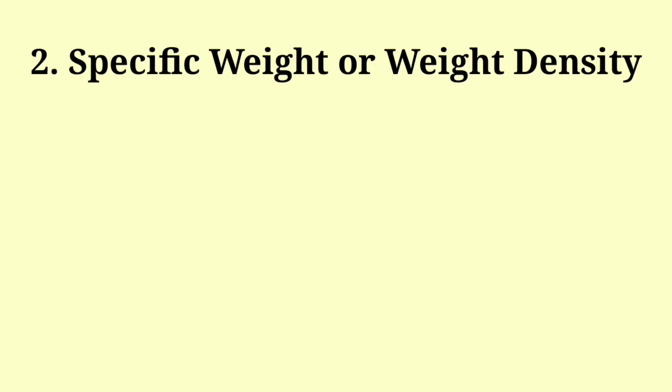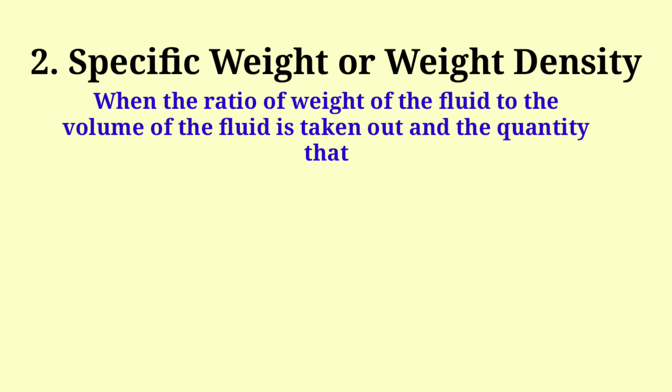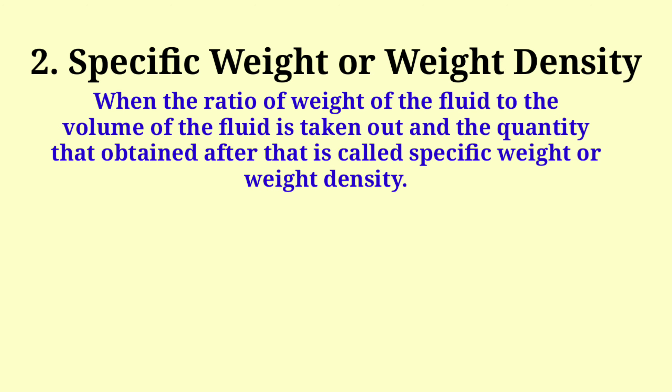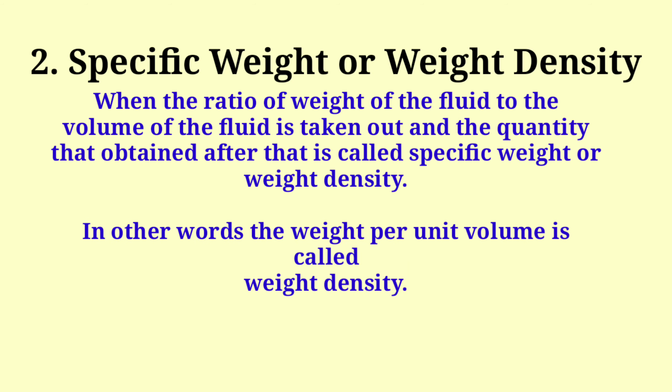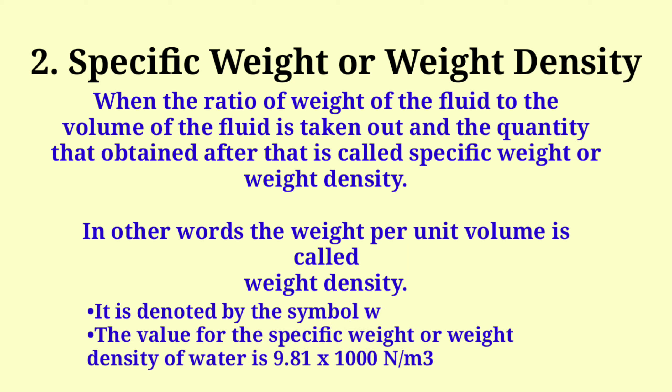Specific weight or weight density. When the ratio of weight of the fluid to the volume of the fluid is taken, the quantity obtained is called specific weight or weight density. In other words, the weight per unit volume is called weight density. It is denoted by the symbol W. The specific weight of water is 9.81 × 1000 N per cubic meter.